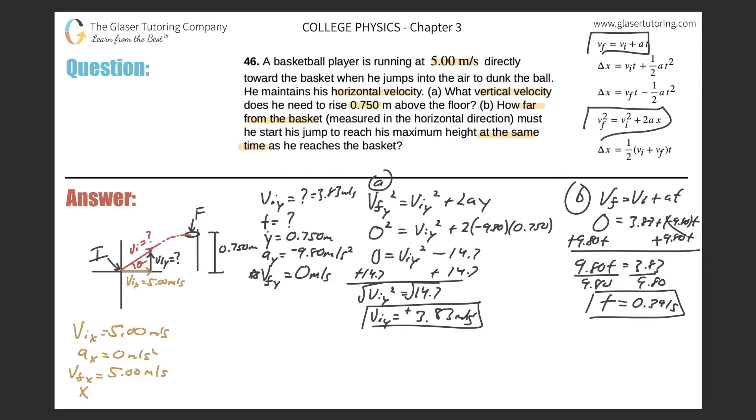I am looking for the x now, the displacement, my horizontal distance. And I just found that the time he is in the air is 0.391 seconds. So how do I solve this?